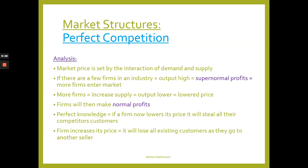Due to perfect knowledge, consumers know how much things cost in certain shops. If a firm lowers its price, it will steal all its competitors' customers, because with perfect competition everyone's selling the same product at the same price. If one business lowers their prices, all consumers - having perfect knowledge - will go to that shop to buy the cheaper product.